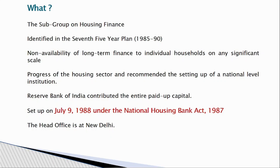The reason was the non-availability of long-term finance to individual households at any significant scale. During those days — 1985-90 — there was no long-term finance for individuals who wanted to construct their house, repair their house, or expand it, for example going from a ground floor to a first floor. So National Housing Bank was identified to progress the housing sector and set up a national-level institution to increase construction for all groups — low income, middle income, and high income.